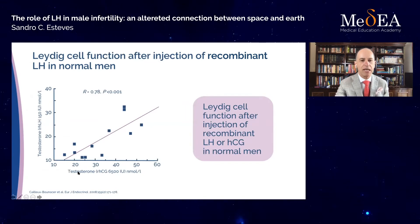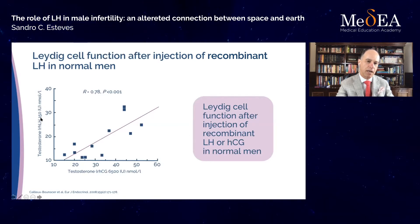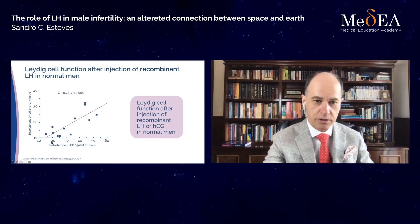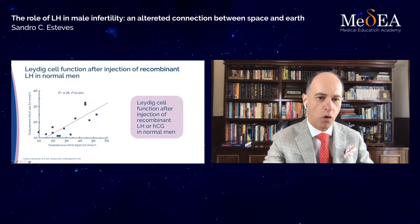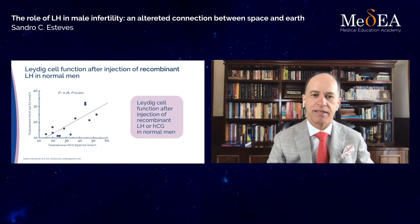Both HCG and LH act on the same receptor and promote testosterone production. However, as you can see in this graph — with testosterone from recombinant HCG on the X axis and testosterone increase from recombinant LH on the Y axis — the line is shifted to the right, meaning HCG is more potent than LH at promoting testosterone production. This is explained by the longer half-life of HCG in circulation and at the target organ.